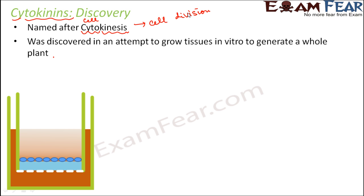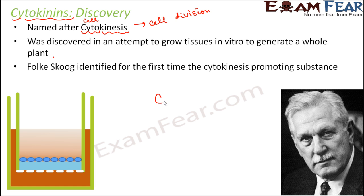Finally, it was observed that other than components like minerals and vitamins needed for plant growth, they added another component which actually helped in regenerating the entire plant. That additional component was coconut milk. Coconut milk helped in generating the whole plant, and the magic ingredient was nothing but a growth-promoting hormone that promotes cell division. Fox Cooke was the scientist who identified this cytokinesis-promoting substance for the first time, and he named it kinetin, which was later known as cytokinins.